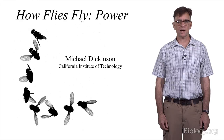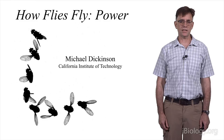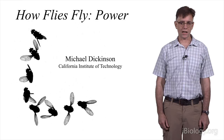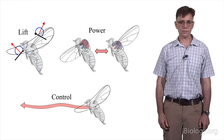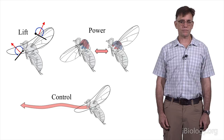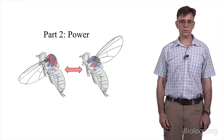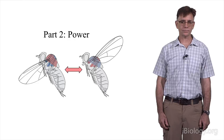Hi, my name is Michael Dickinson. I'm a professor of biology and bioengineering at the California Institute of Technology. This is the second in a series of lectures on how flies fly. In the first lecture, I discussed how flies make aerodynamic forces by flapping their wings. In the third lecture, we'll focus on how flies control flight using sensors and other strategies. But in this lecture, I want to focus on the question of power — how flies and other insects generate enough force to flap their wings as they fly.